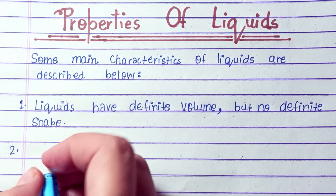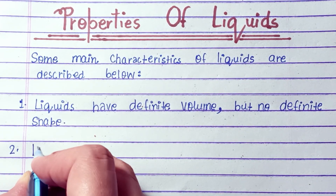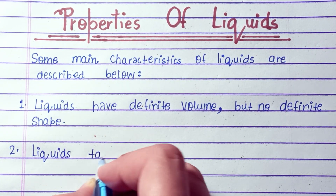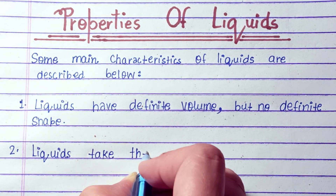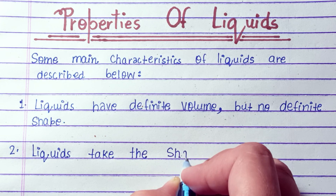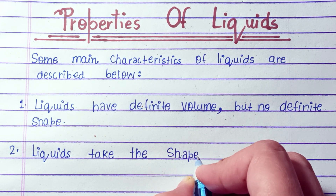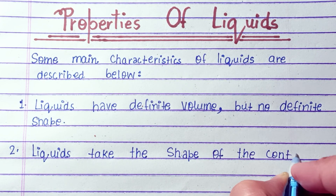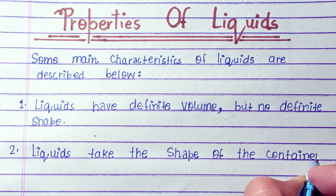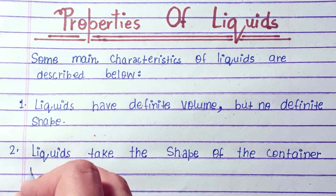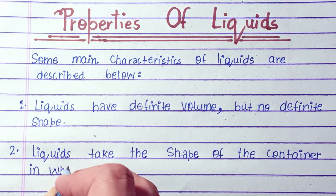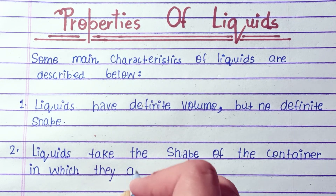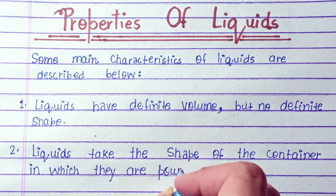Liquids have definite volume but no definite shape. Liquids take the shape of the container in which they are poured.